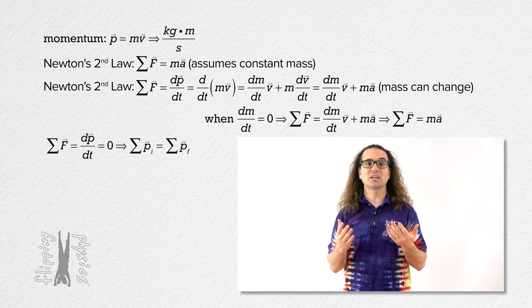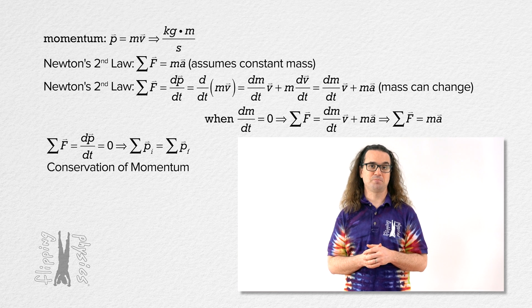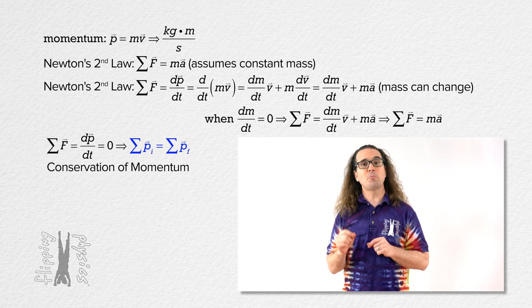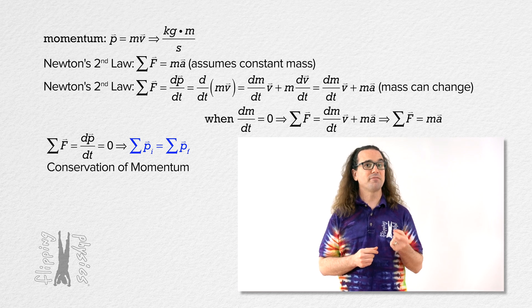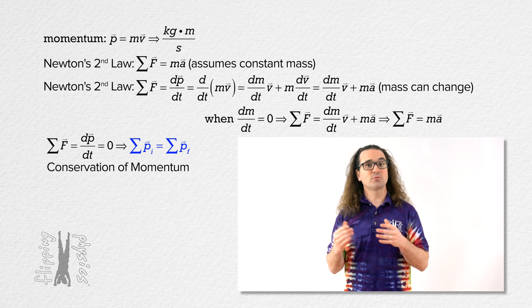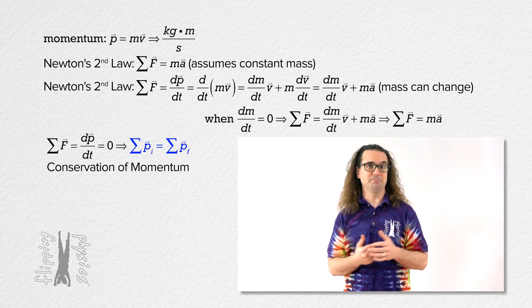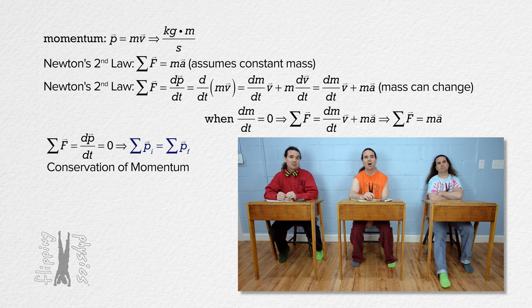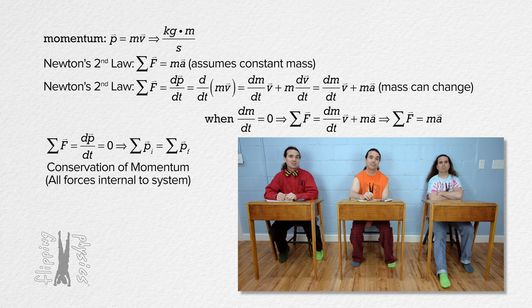This is called conservation of momentum. The sum of the initial momenta equals the sum of the final momenta. We have derived conservation of linear momentum. Got it. Linear momentum of a system is conserved when all the forces are internal to the system and the net force acting on the system equals zero. Like a rocket.